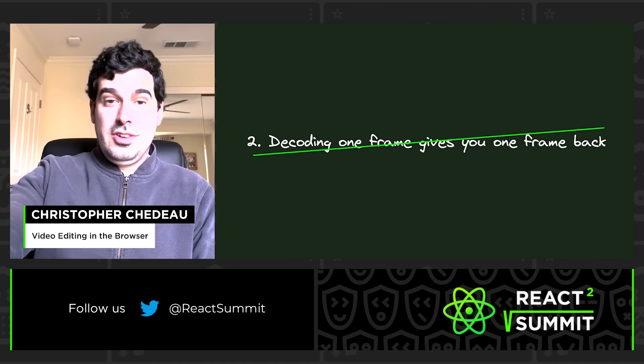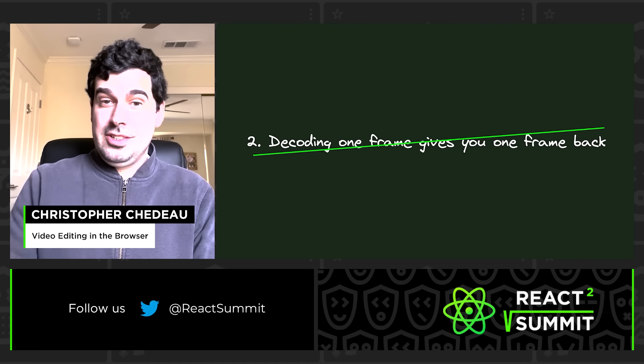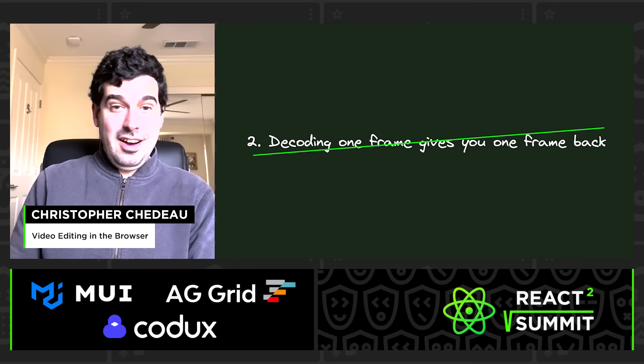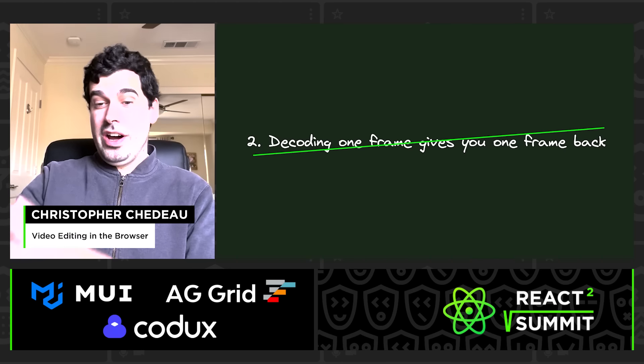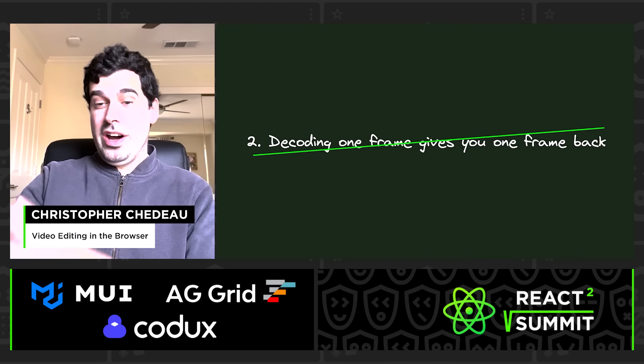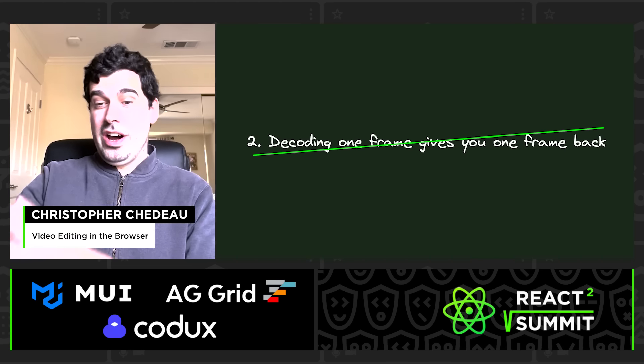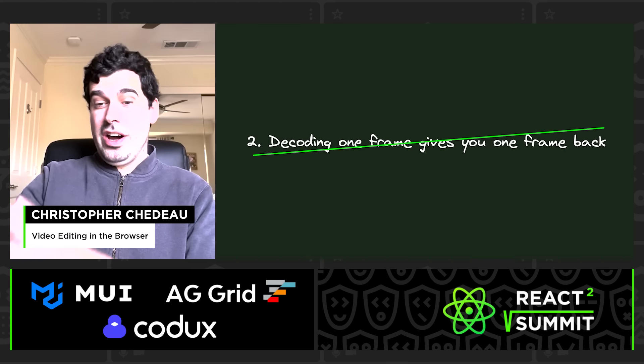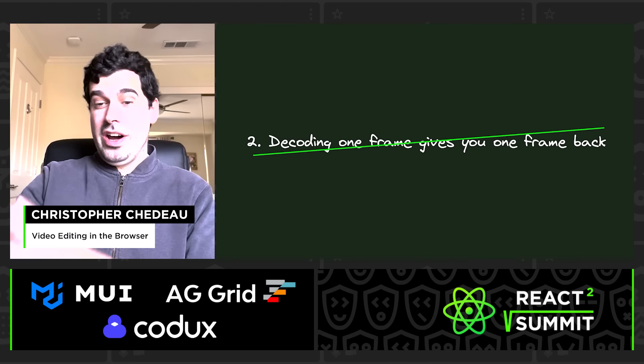This is very mind-bending because every API I can think of, even asynchronous ones, when you call something it gives it back to you after some time. But it's never 'you get one, or ten, or zero in an unpredictable way.'